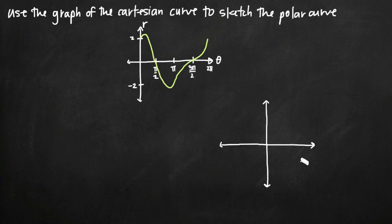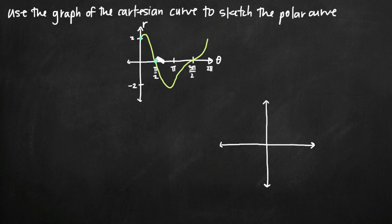An exercise like this is really just about identifying points along the curve that you've been given so that you can translate them onto the polar coordinate system. Looking at the graph, we notice that we have a point which means that at an angle of pi, we're out a distance of negative 2 from the origin. We also have a point which tells us that when the angle is pi over 2, we're out a distance of 0 from the origin.